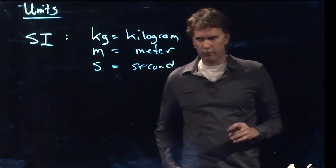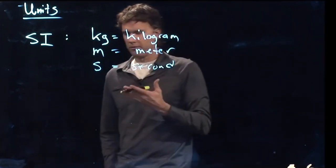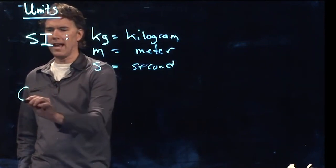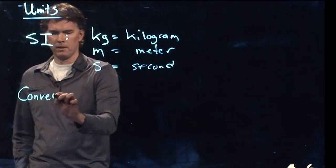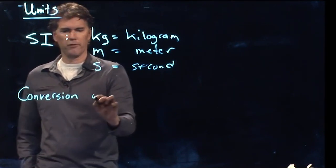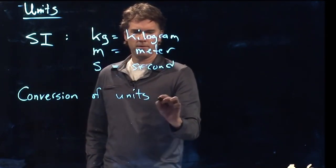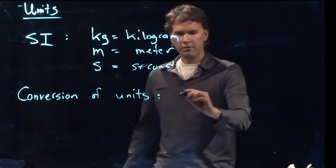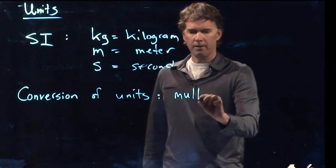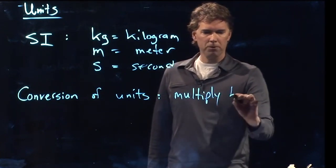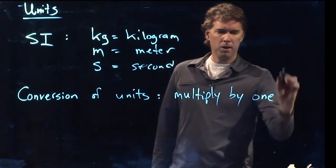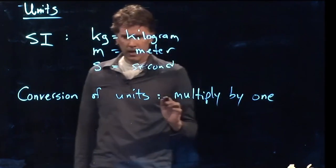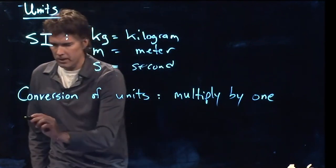So let's talk about conversion, because we had just mentioned 55 miles per hour. How do we convert that to some other units? Well, it's very simple. All you have to do is multiply by one. Let's multiply by one every time.